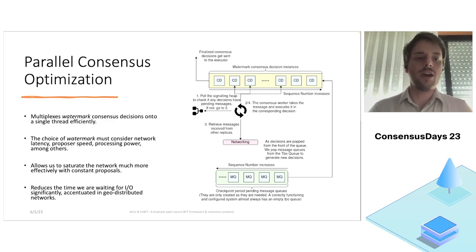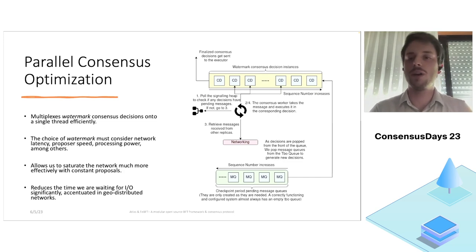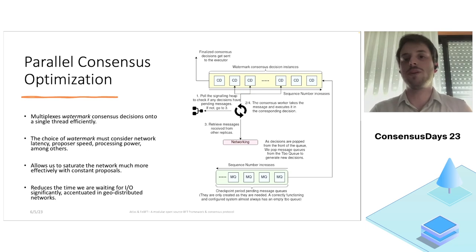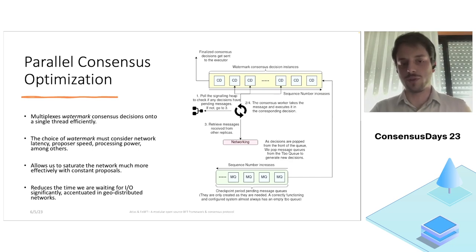This allows us to saturate the network much more effectively, since we can have a number of watermark decisions running in parallel. This watermark should consider network latency, proposer speed, and available processing power in order to keep the network always saturated with requests. With PBFT-like ordering protocols we spend at least 60 percent of the time not sending any requests on the network, which is wasted time that we want to reduce.